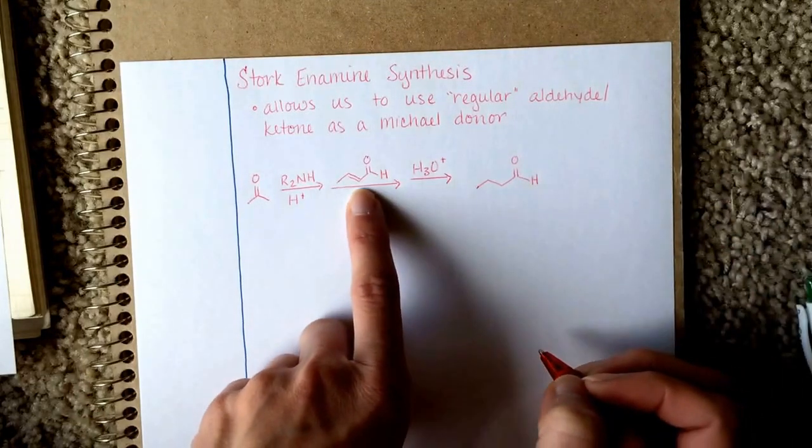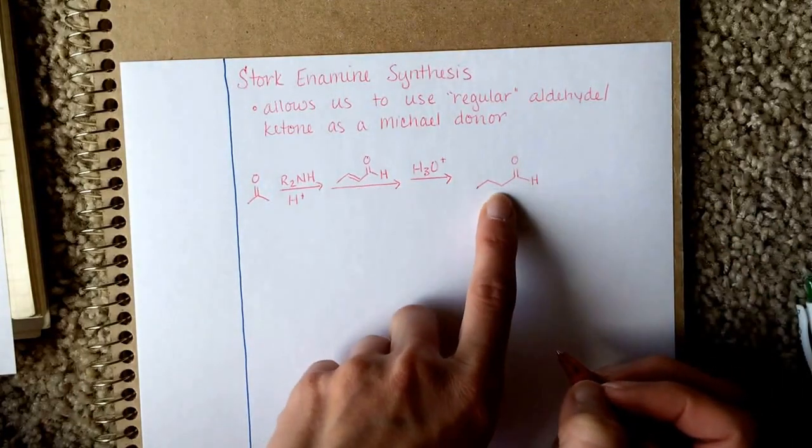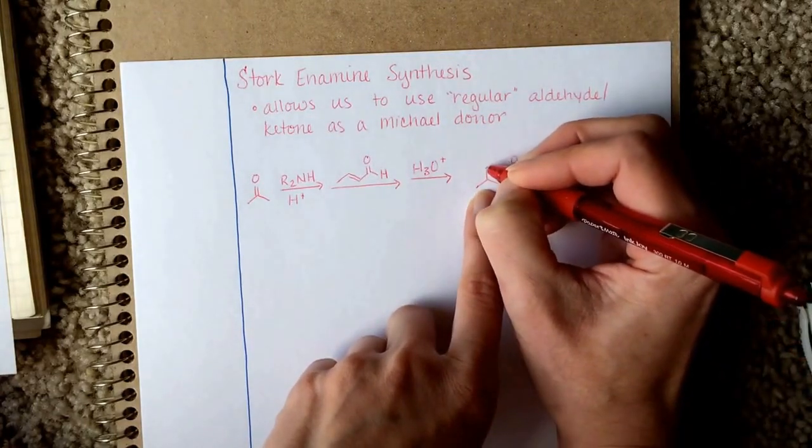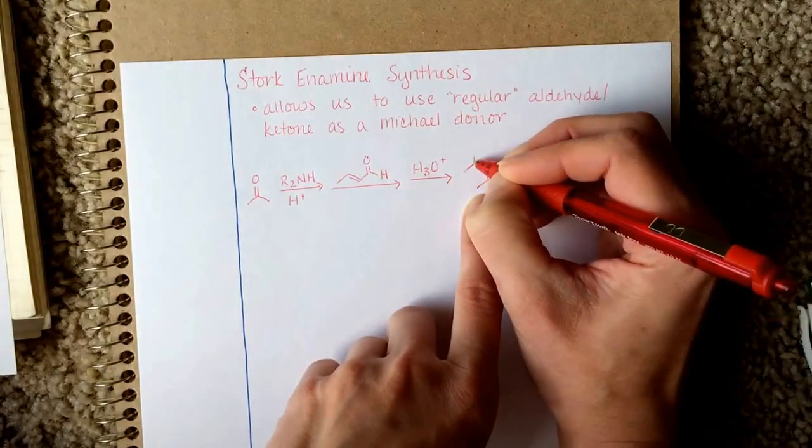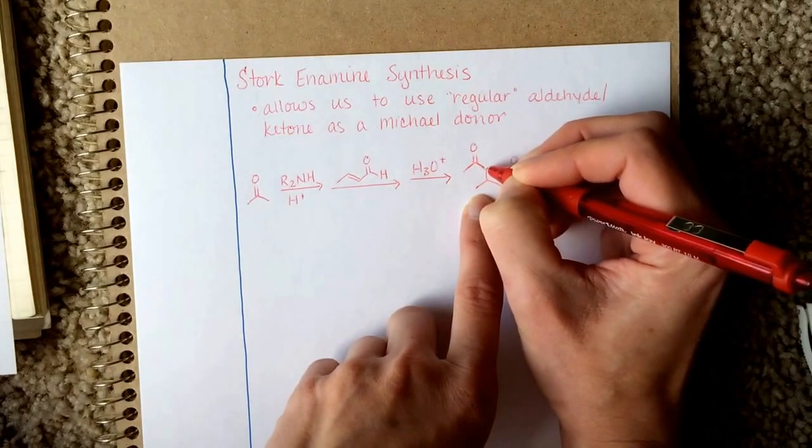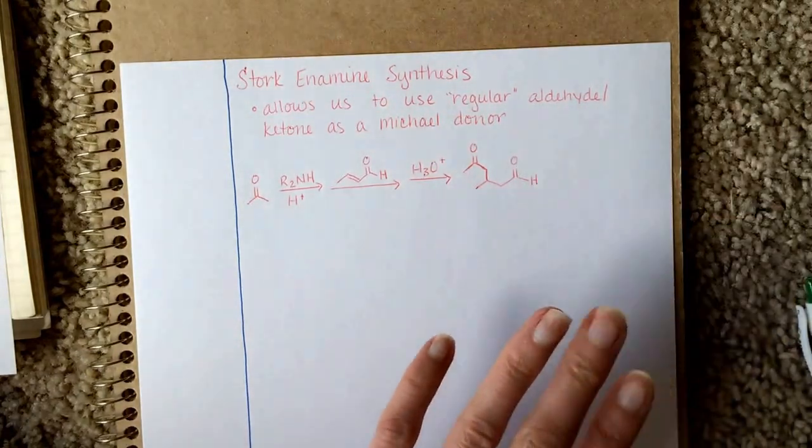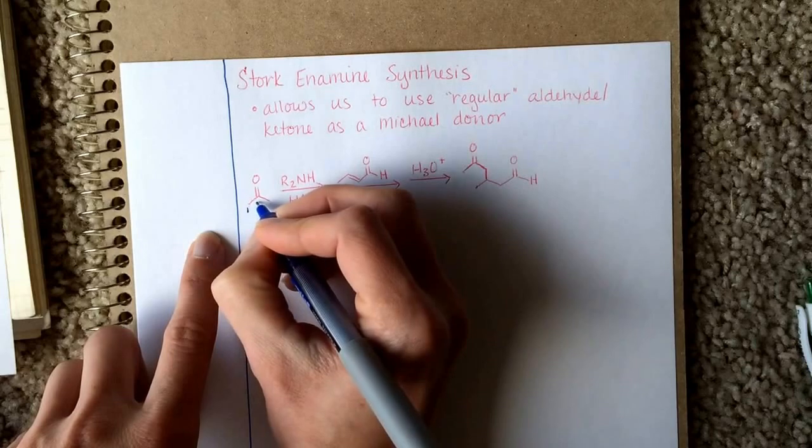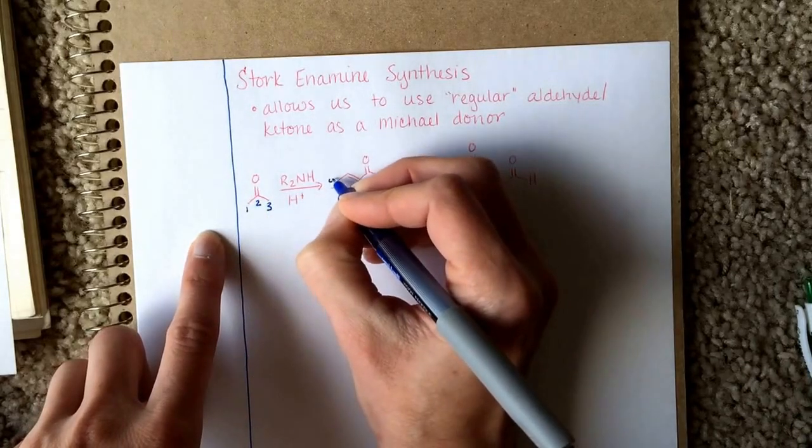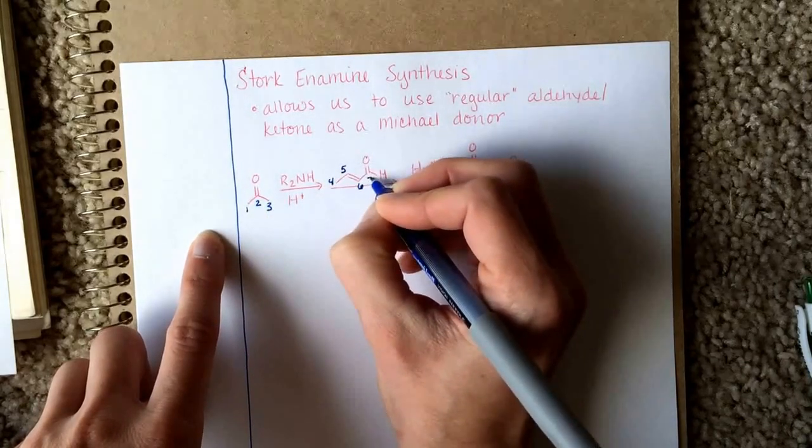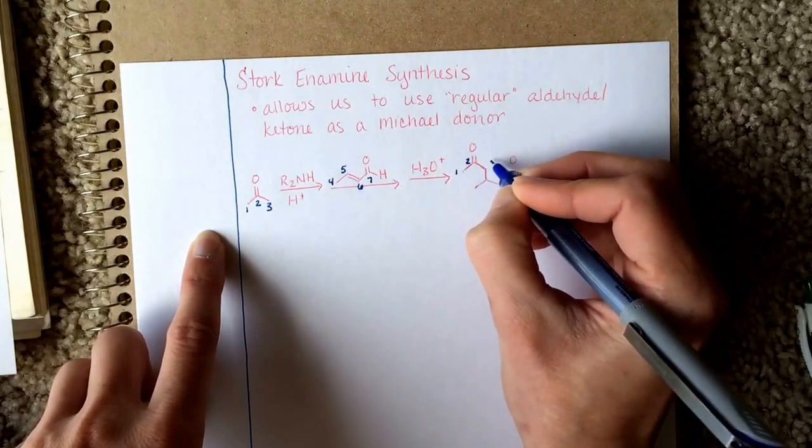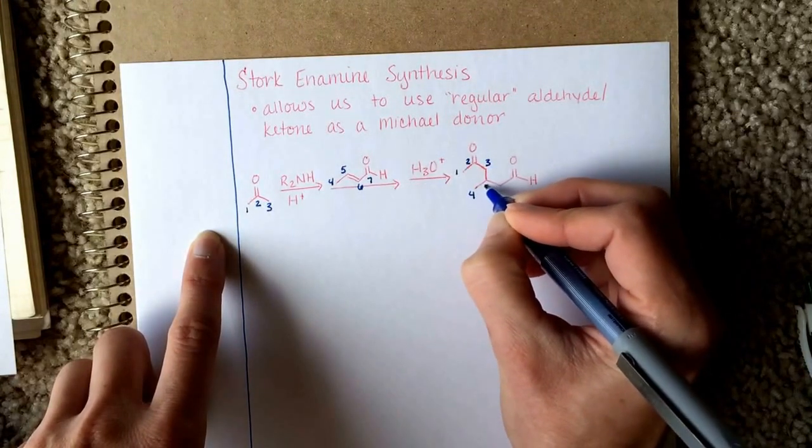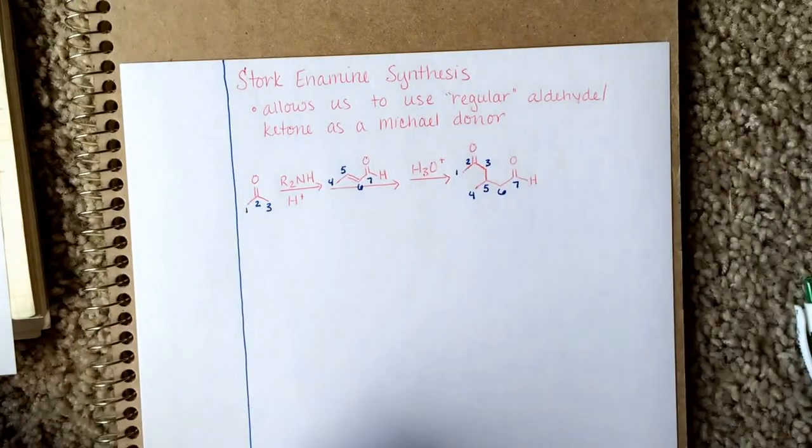So it takes the nitrogen off, and we end up with a product that looks like this. There's the Michael acceptor with its double bond gone. And here is the acetone that we added to it. And just in case you're getting lost with carbons: one, two, three, four, five, six, seven. One, two, three, four, five, six, seven. So there's that.